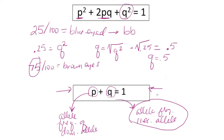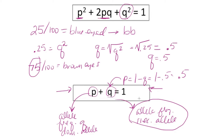The equation p plus q equals one makes sense because there are only two possible alleles for this gene, so together both forms must equal 100%. We can easily find p knowing q: p equals one minus q. So one minus 0.5 equals 0.5. In this example, both p and q are equal to 0.5.